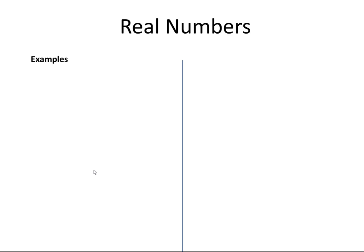Let us look at examples of addition and subtraction of real numbers. 0 plus bracket minus 6. This is the same as 0 minus 6, which is equal to minus 6.